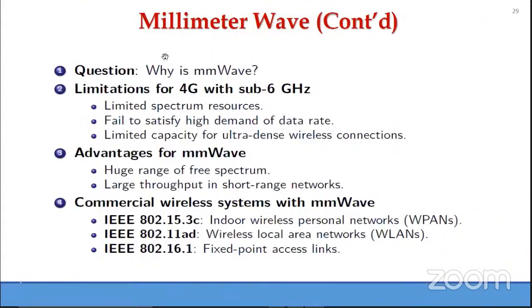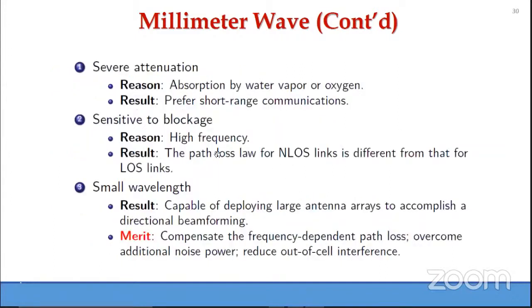Why millimeter wave? Because microwave alone has limited spectrum resources and fails to satisfy high data rate demands, with limited capacity for ultra-dense wireless connections. The advantage of millimeter wave is that a huge range of spectrum is available, enabling very high data rate — but with only short range due to severe attenuation from absorption by water vapor or oxygen molecules.